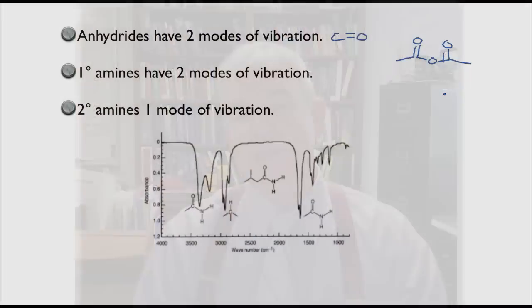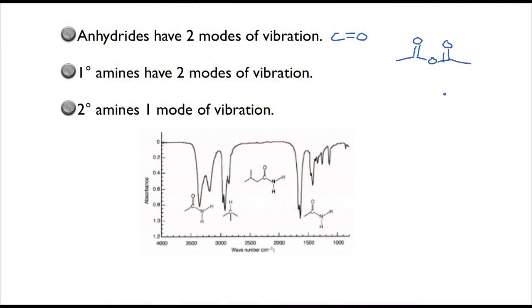You also see this in amines. A primary amine has a nitrogen with an NH2 group, and again there are two modes of vibration: a symmetrical NH vibration and an asymmetrical NH vibration. That gives rise to a set of double fangs. We can see this on the screen in this example IR spectrum — this is actually an amide, not an amine, but it has the NH2 functional group. You see at around 3300 that characteristic double fang that tells you it's an NH2.